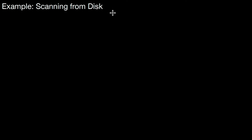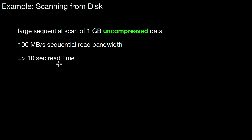Let's look at some examples. Assume a large sequential scan of 1 GB of uncompressed data. Let's assume we have 100 MB sequential read bandwidth — something like a single disk we're reading from. This means we need 10 seconds to read that file, and the entire process is very likely to be IO bound, so the CPU will be idling most of the time. This is a strictly IO-bound process; the disk is the bottleneck slowing down all processing.